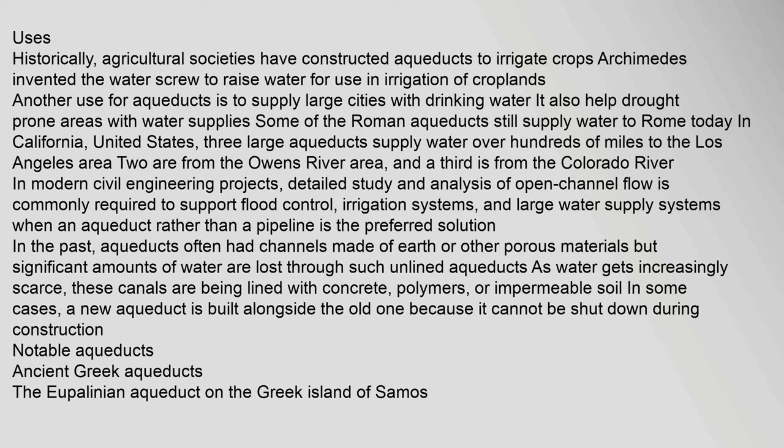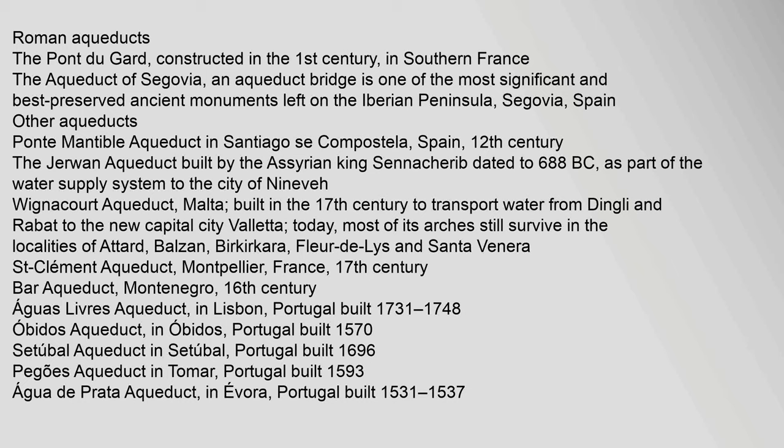Notable ancient Greek aqueducts include the Eupalinian aqueduct on the Greek island of Samos. Among Roman aqueducts, the Pont du Gard was constructed in the first century in southern France. The Aqueduct of Segovia, an aqueduct bridge, is one of the most significant and best-preserved ancient monuments on the Iberian Peninsula in Segovia, Spain. Other notable aqueducts include the Ponte Mantible aqueduct in Santiago de Compostela, Spain (12th century), and the Jerwan aqueduct built by the Assyrian king Sennacherib, dated to 688 BC, as part of the water supply system to the city of Nineveh.